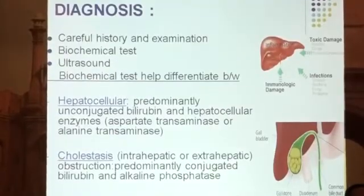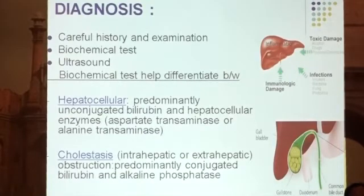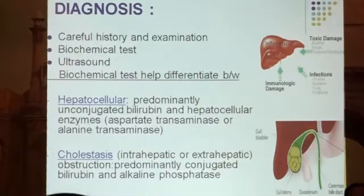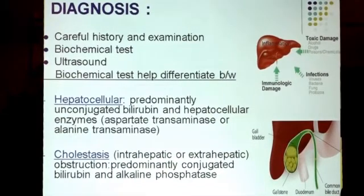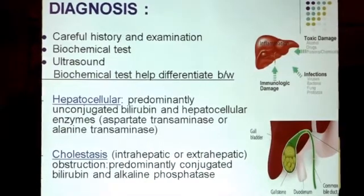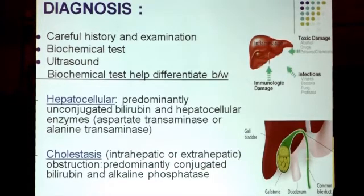We should have clinical acumen, take a proper history and do an examination, combining it with biochemical tests and ultrasound. It is very important that we differentiate whether it is a hepatocellular cause or cholestasis. In hepatocellular cause we will predominantly find unconjugated bilirubin, and ALT and AST would be increased. In obstructive pathology, the liver conjugates the bilirubin so conjugated bilirubin and alkaline phosphatase will be raised.